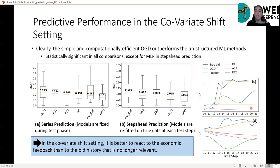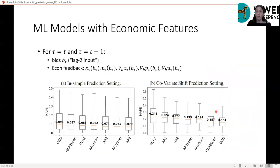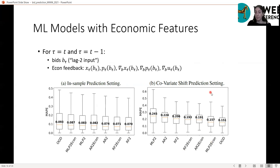This demonstrates how in the covariate shift setting it is better to react to economic feedback than to bid history that is no longer relevant. We also tried giving economic feedback similar to what the econometric-based no-regret methods receive to the machine learning methods as well. In the in-sample setting, these additional economic features did not improve performance — bid information alone is a sufficient predictor when there is no change. However, in the covariate shift setting, the additional economic features were useful for ML methods, especially for the network model, which now achieves performance much closer to OGD.